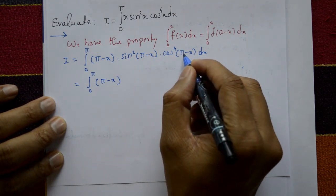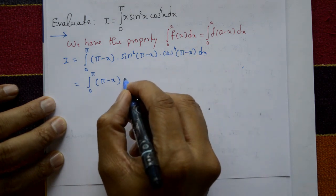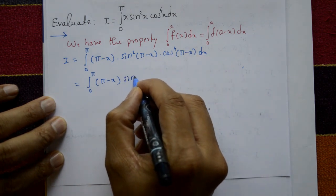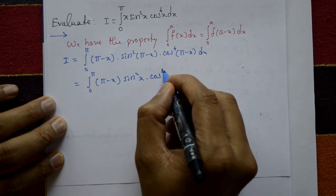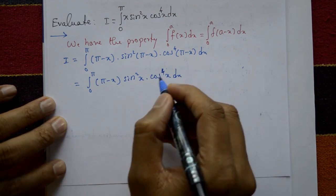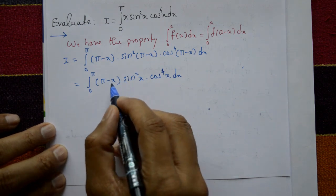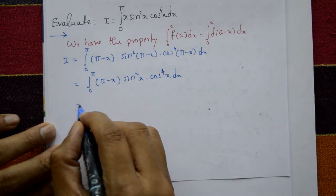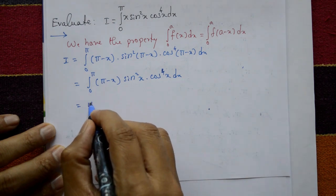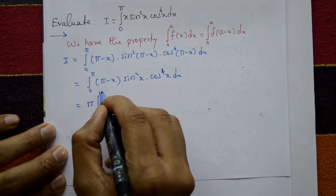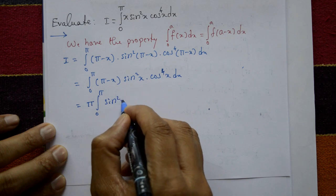Using the identities sin(180° minus θ) = sinθ and cos(180° minus θ) = -cosθ — both in the second quadrant — this becomes the integration from 0 to π of (π minus x)·sin²x·cos⁴x dx. Now separate π and minus x.